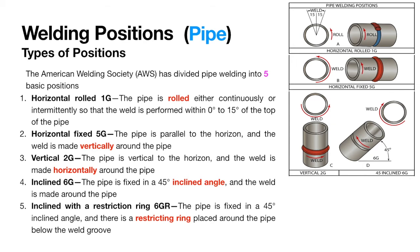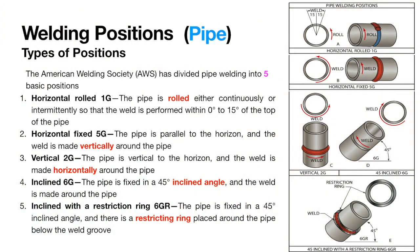6G is also called welding in multiple positions. The pipe has its axis inclined 45 degrees to the horizontal axis, and the welding is done without rotating the pipe.